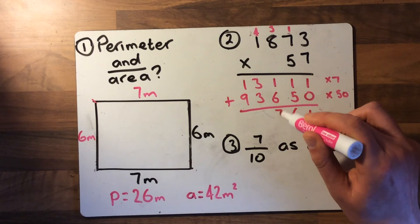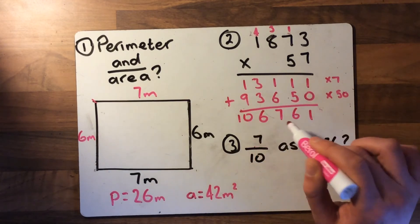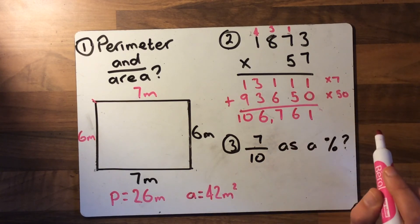So one, six, seven, six, and then nine add one, 10. 106,761.